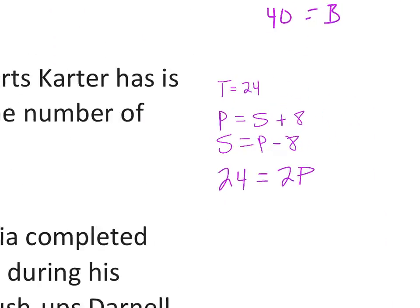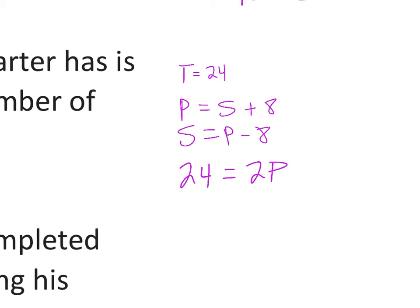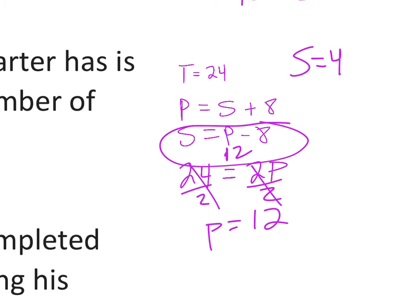So 24 t-shirts. It said that he has eight fewer pairs of shoes than pants. So I could write either of these two: shoes plus eight gives you pants or shoes equals pants minus eight. And that his t-shirts, which is 24, is double his pants. So 2P. So I'm just going to divide these by two to cancel that out. And that gives me P equals 12. So I know he has 12 pants. And so now I'm just going to plug that into this equation. And 12 minus eight is four. So S equals four. Pants equaled 12, and t-shirts was 24.